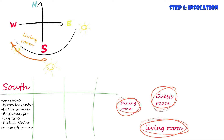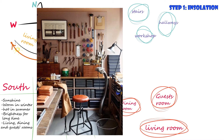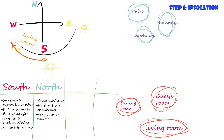About the north side: this side is always lit with a clear, cold light, but you can't see the sun or its rays. It's very cold in winter. You can use it for stairs, hallways, or a workshop — because when you're drawing or working in a workshop, it's actually very annoying to have direct sun rays, so the north side is very useful there.